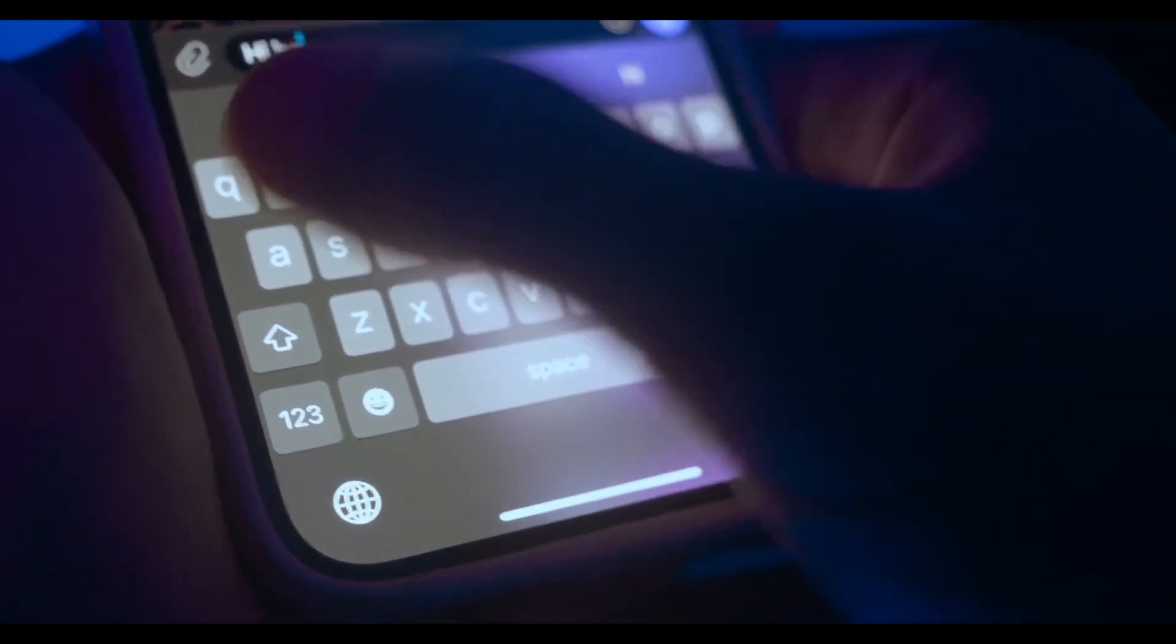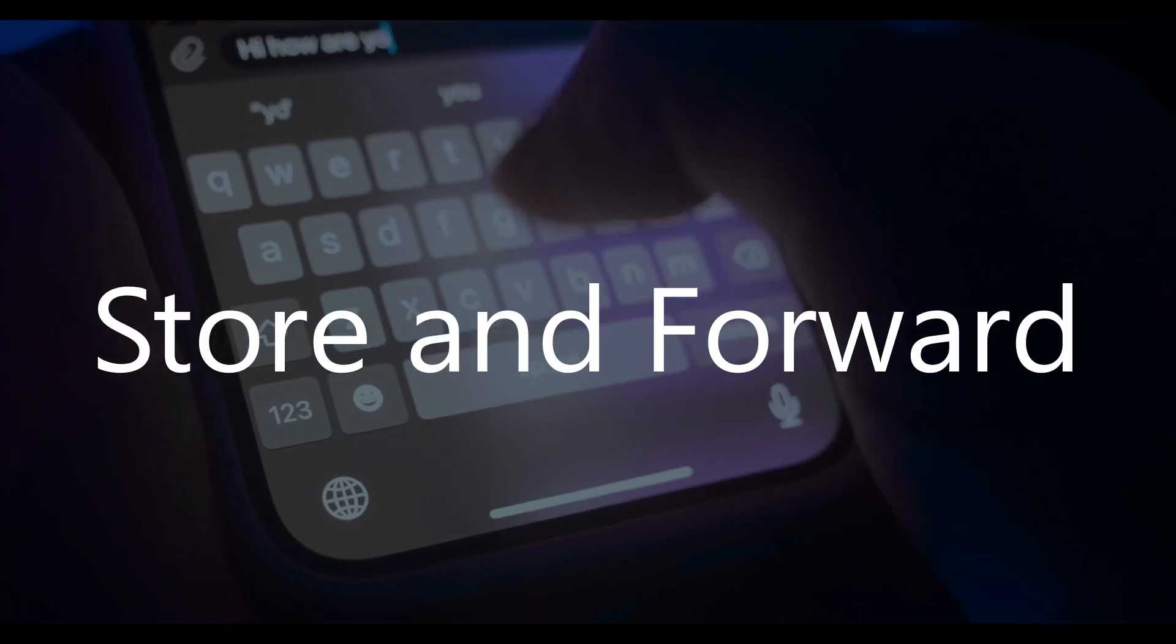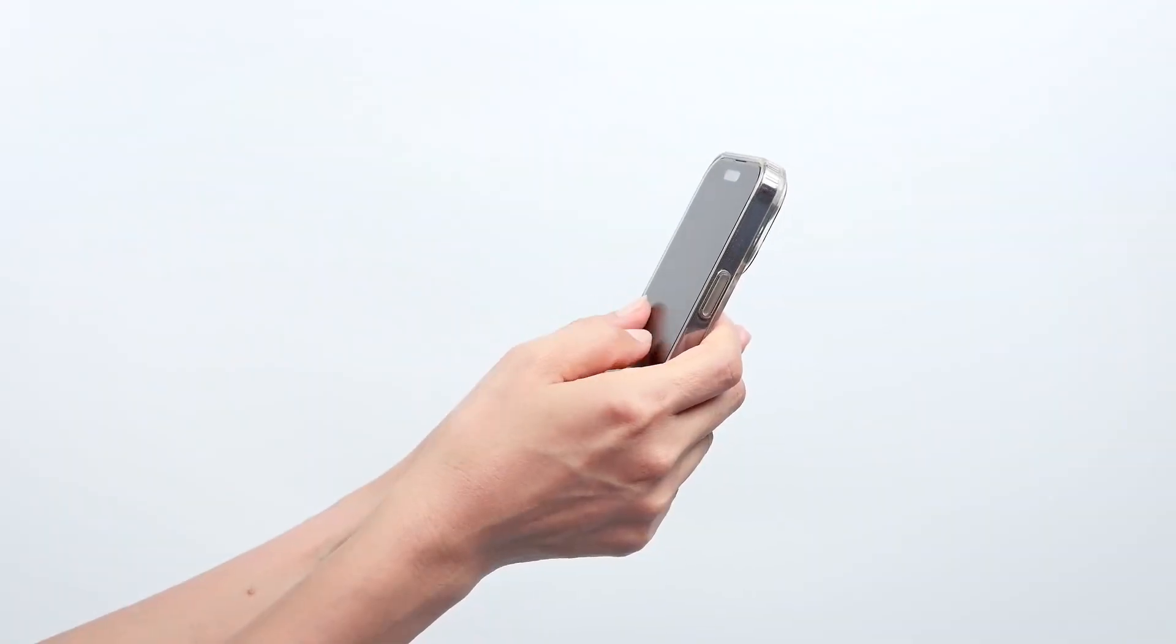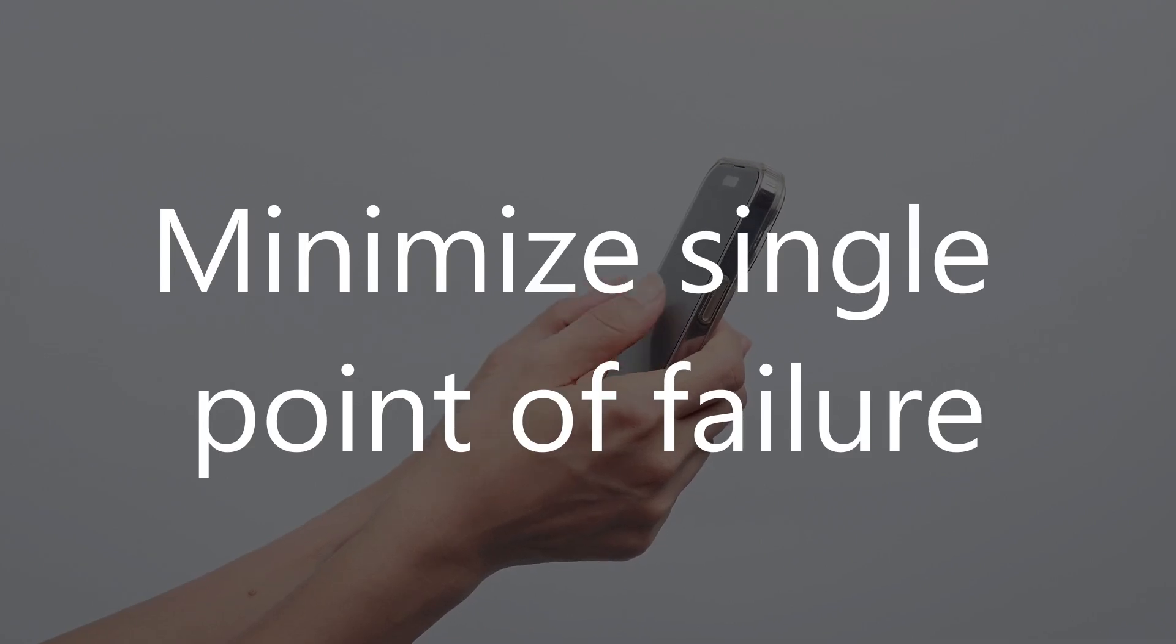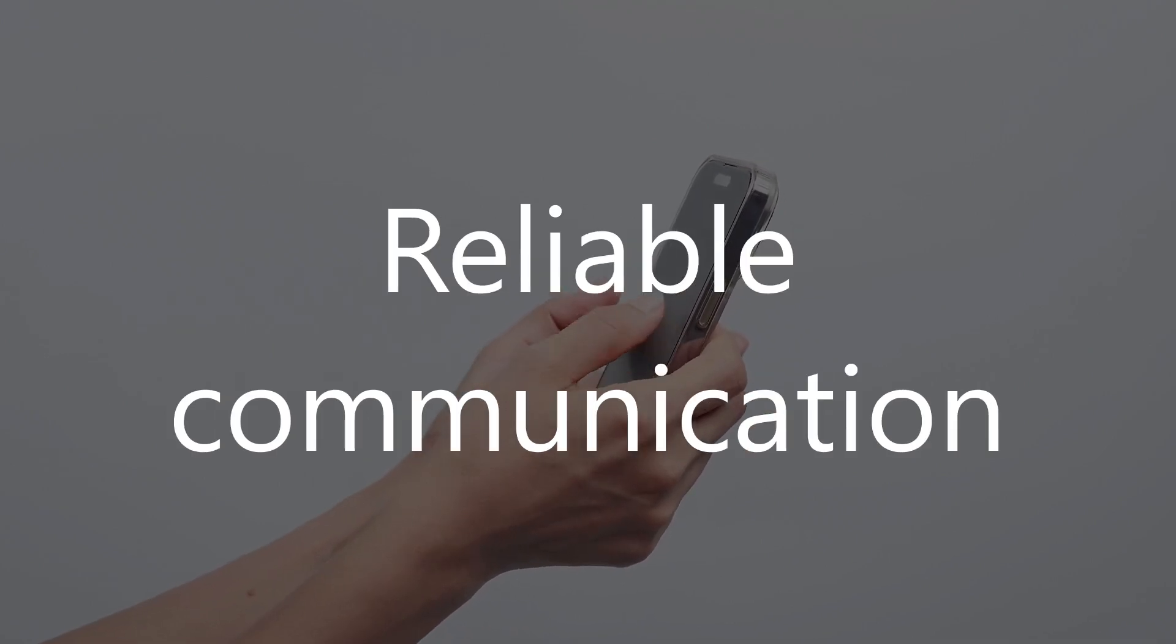BitChat also adds redundancy with a store and forward mechanism. That is, if a relay cannot immediately transfer the message along, it stores the message and forwards it once a new neighbor comes into its range. All these strategies minimize single points of failure and make BitChat communication more reliable.